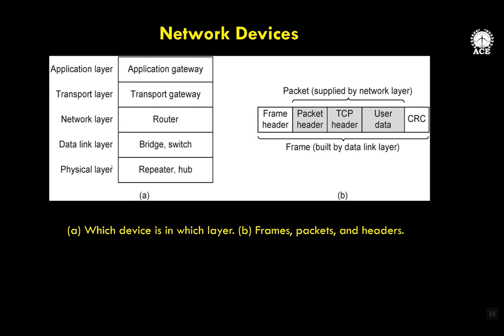At the physical layer, we use devices which are called repeaters and hub. At the data link layer, we use devices which are called bridges and switches. At the network layer, we use routers. At the transport layer, we use transport gateways, and at the application layer, application gateways. So we are primarily going to have a look at each of them.